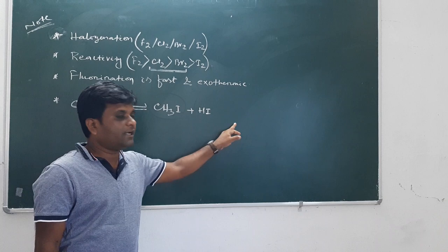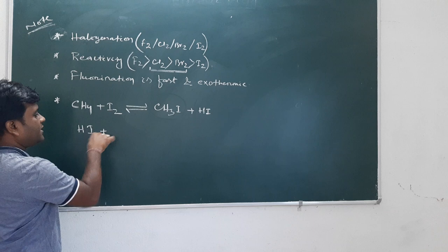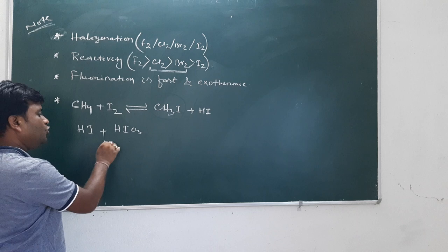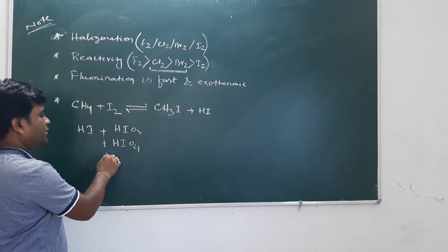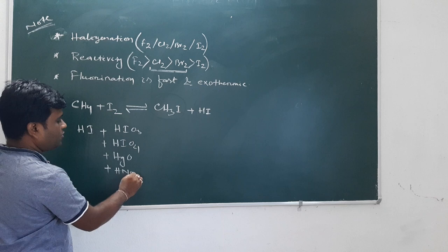Because it is a reversible reaction, to obtain CH3I we need to remove HI. We can add oxidizing agents like I2 (iodine), or HIO3 (periodic acid), or HgO, or HNO3. These can oxidize HI to I2 plus H2O.